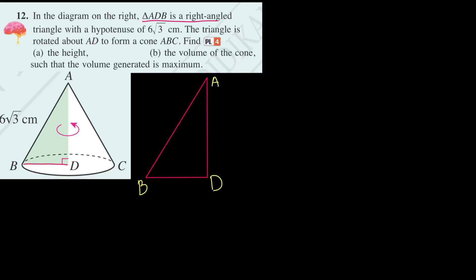Given ADB is a right-angled triangle with a hypotenuse of 6√3 cm. The radius of the cone is represented by BD, and the height of the cone is represented by h. They ask us to find the height and the volume of the cone when the volume generated is maximum.